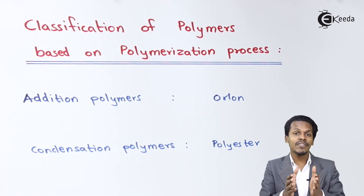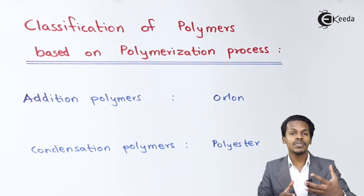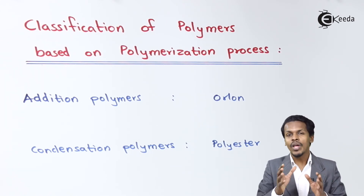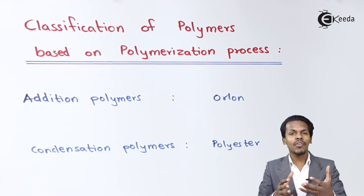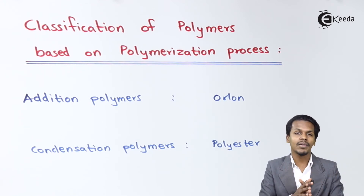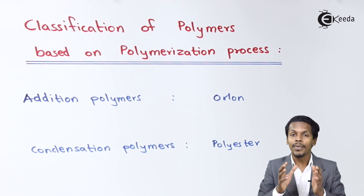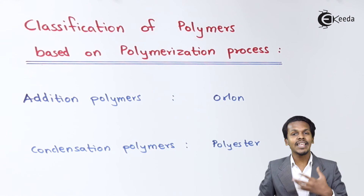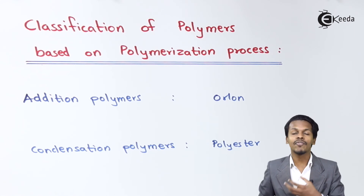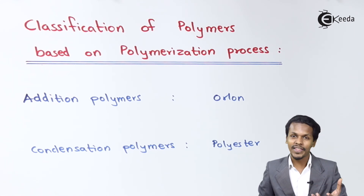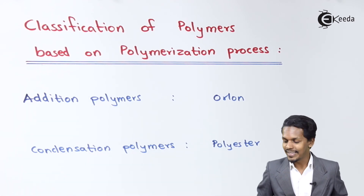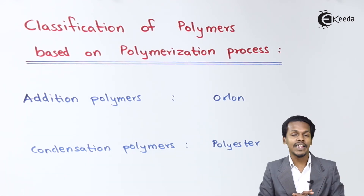But in the case of a condensation polymer, if I'm using n number of monomers to form a polymer, the total number of carbon, nitrogen, or any atoms in the polymer is less compared to the total number of atoms in the monomers taken. The rest has been eliminated in the form of water, methane, or certain smaller molecules. So these are the two differences between addition polymers and condensation polymers.